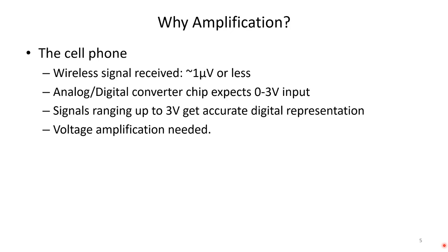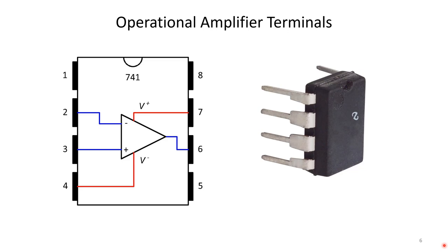We start with this chip, introduced by Fairchild Semiconductor in 1968, I believe. It's an operational amplifier, the 741. The picture on the right shows a chip, an integrated circuit chip with eight pins. Those pins are represented as follows with the op amp symbol, which is a triangle rotated to the right or to the left. We'll talk more about these inputs.